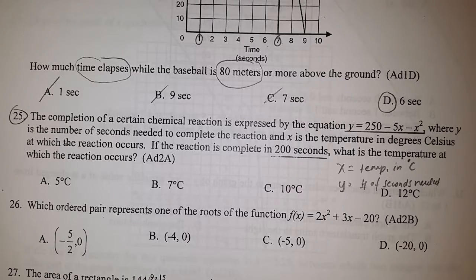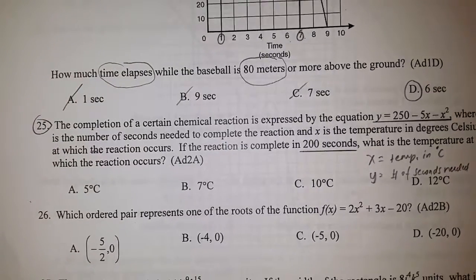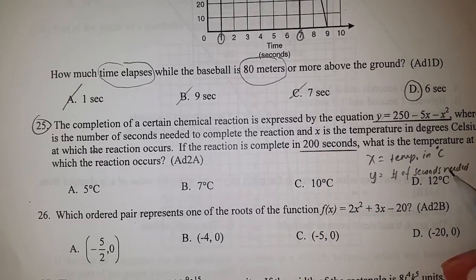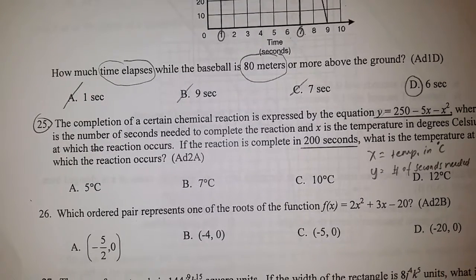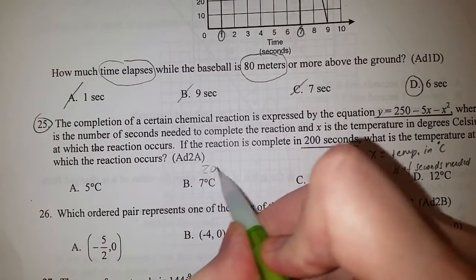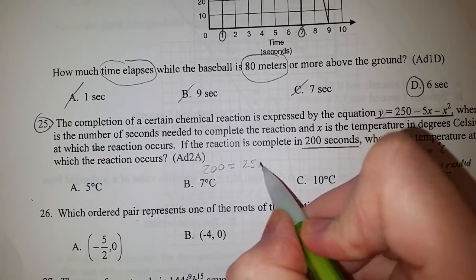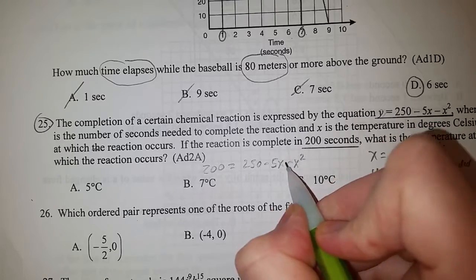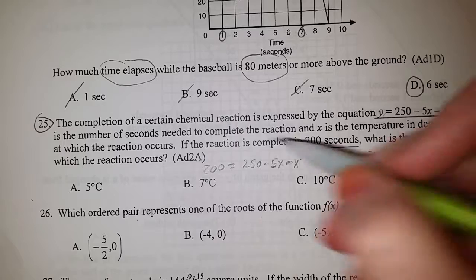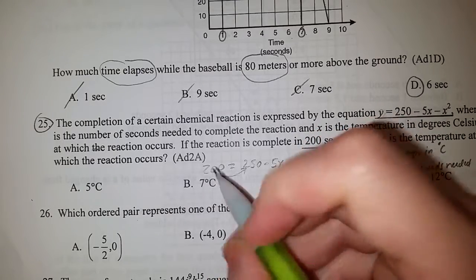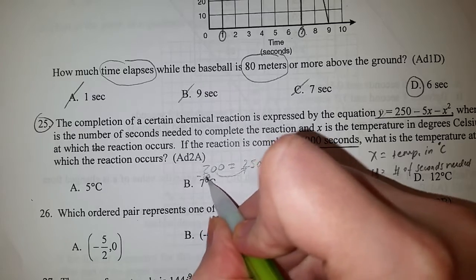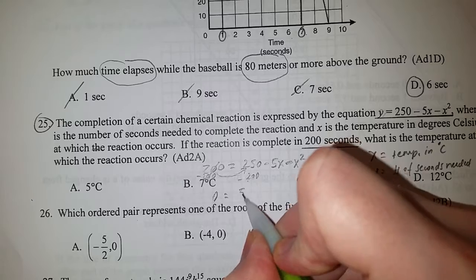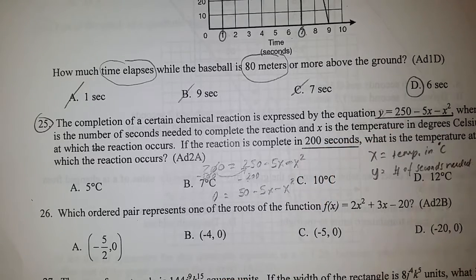We need to replace y with 200. After 200 seconds, we need to find out what the value of x would be. Let's rewrite this: 200 = 250 - 5x - x². There are two ways of approaching this problem. First, you could bring the 200 over by subtracting 200 from both sides.